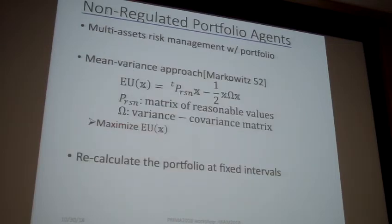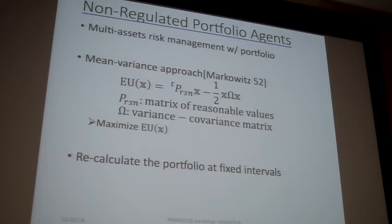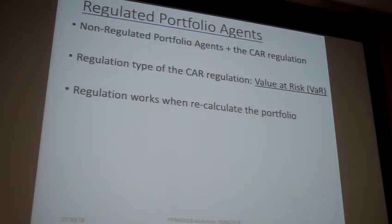The second agent type is the non-regulated portfolio agent. This type of agent manages their risk with a multi-asset portfolio. The approach for optimization is employing a mean-variance approach from Markowitz. The utility functions are defined with this equation. Every agent maximizes their expected utility function. Usually portfolio optimization recalculates their portfolio at every step, but this type of agent is supposed to be some kind of bank agent, so these agents recalculate their portfolio only at fixed intervals.